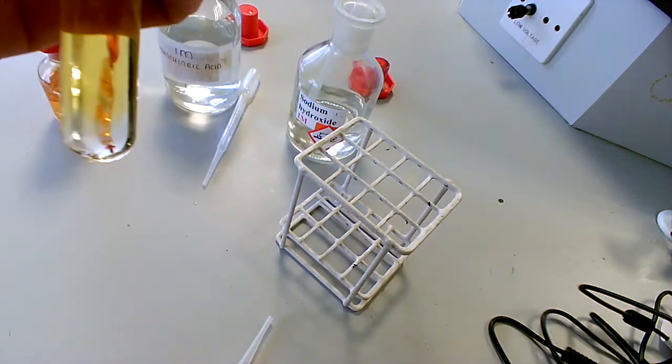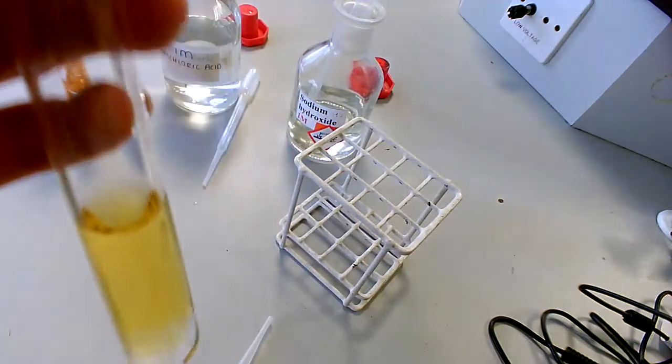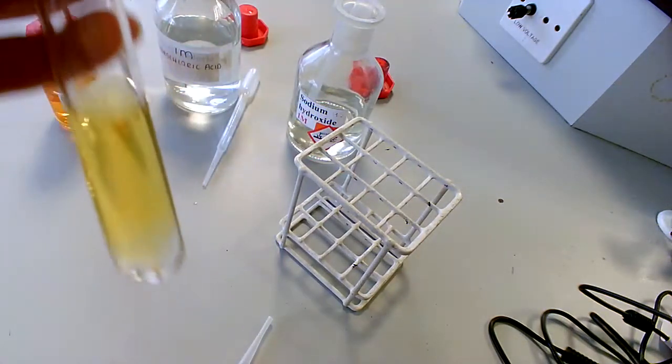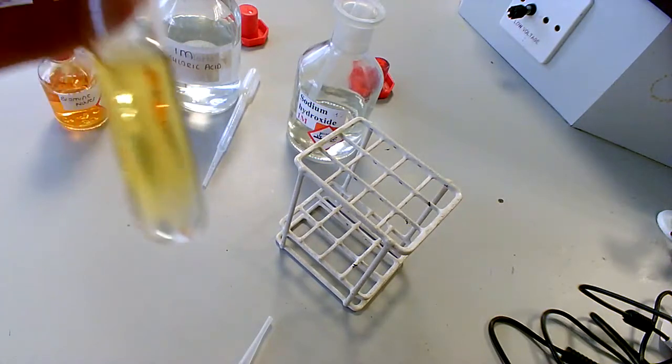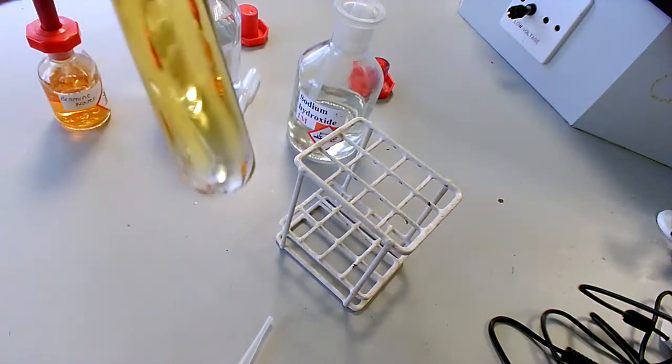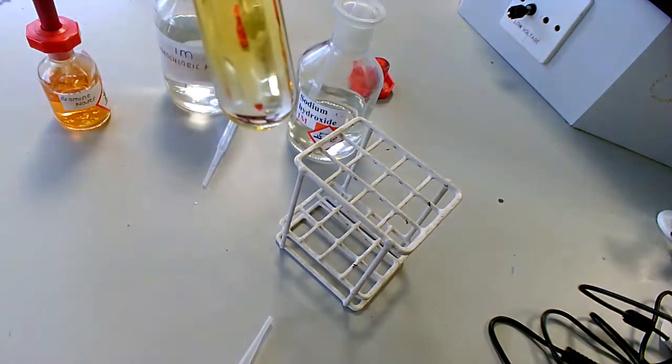So maybe have a think about what's going on here. I added bromine water with sodium hydroxide and it's gone colorless. And then I've added hydrochloric acid and it has turned orange again. So before you move on to the next slide, maybe try and work out what's going on, okay?